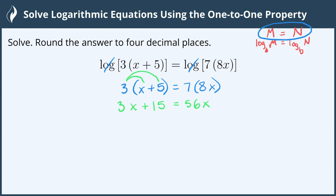Now we want to combine all the x's on one side, so we'll subtract 3x from both sides, giving us 15 equals 53x, and then divide both sides by 53 to isolate the variable.